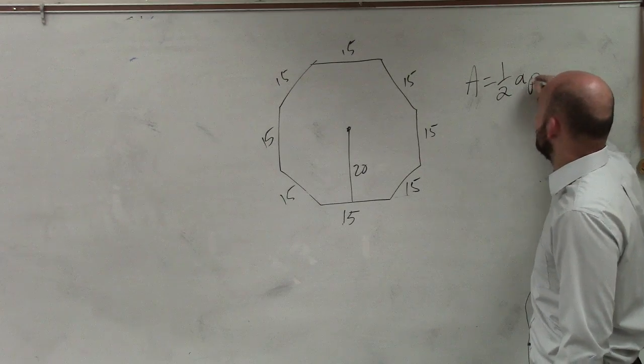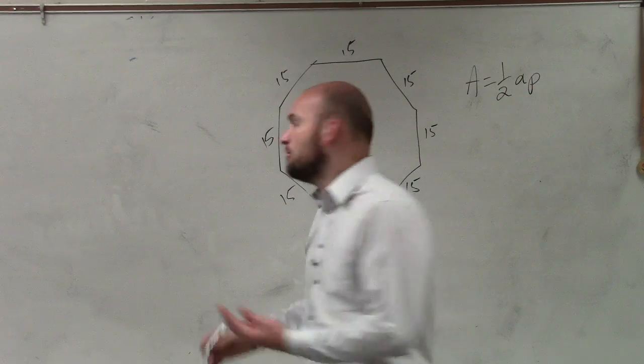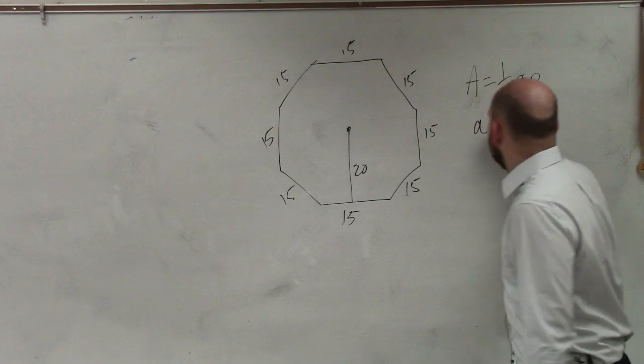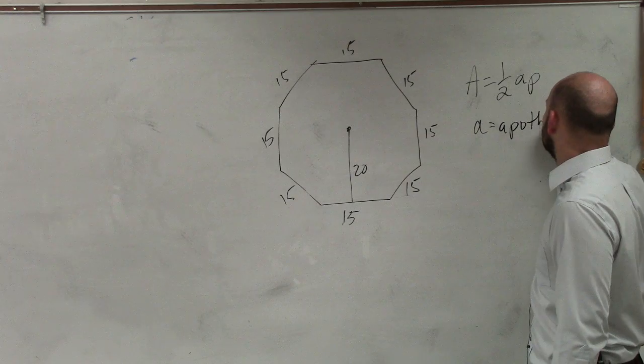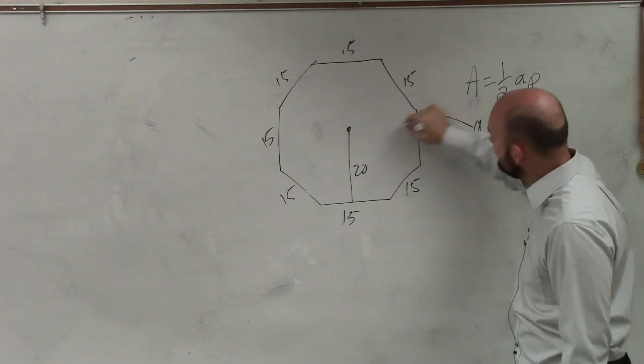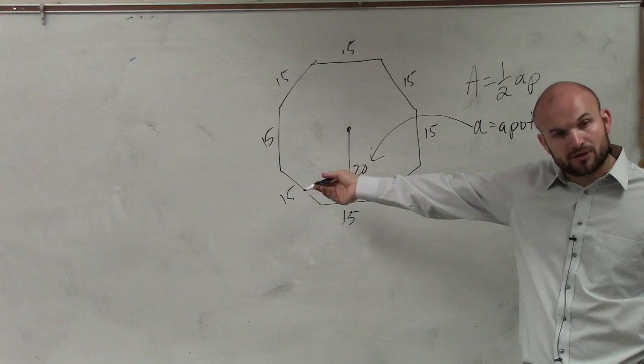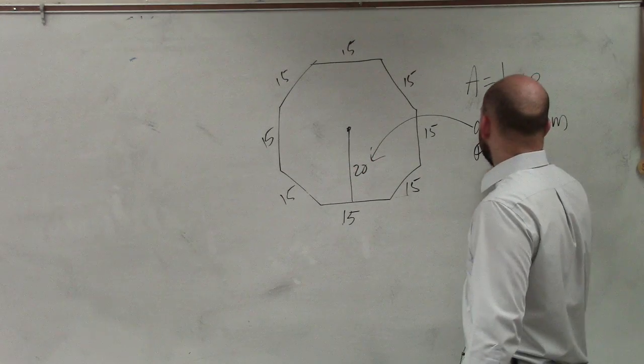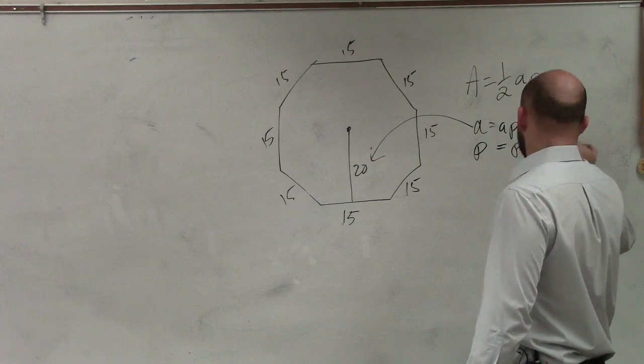equals 1 half a times p. Well, remember, a equals the apothem. And the apothem is the distance from the base to the center of a regular polygon. And p equals the perimeter.